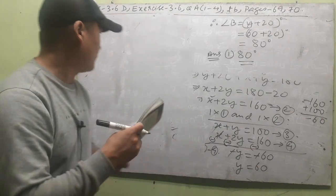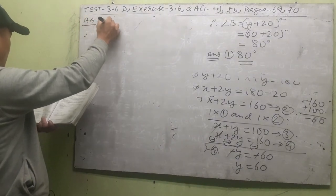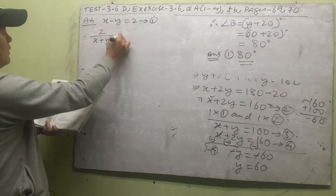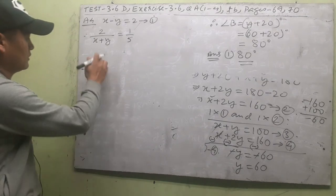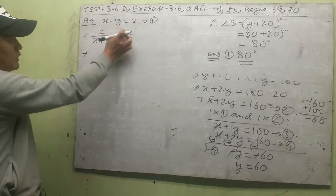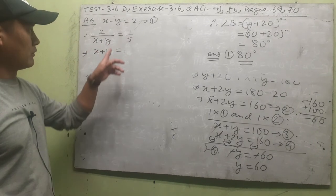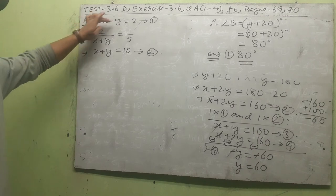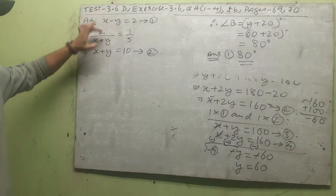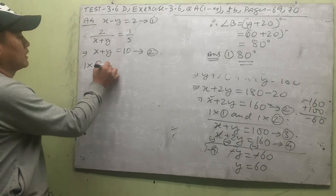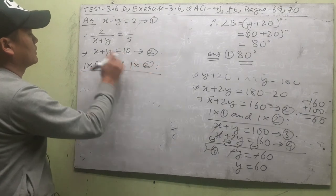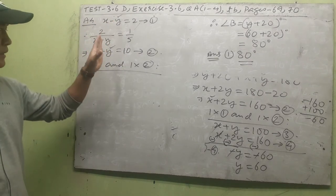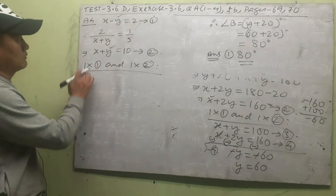Let's go to question a4. The first equation is x − y = 2 (equation 1). The second equation is 2/(x+y) = 1/5; cross-multiplying gives x + y = 10 (equation 2).